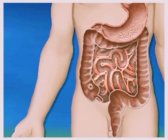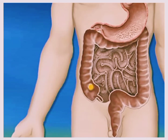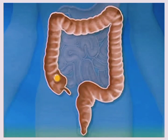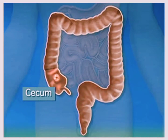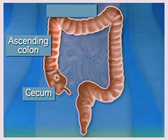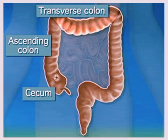The food particles and debris that are not absorbed leave the small intestine and enter the colon, or large intestine. The colon is a tube divided into many sections. The first section is called the cecum. The second section is the ascending colon, located on the right side of the abdomen, and extends upward.